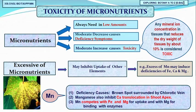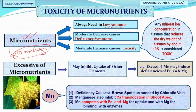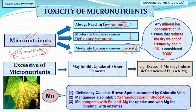Now we begin today's lecture with the toxicity of micronutrients — a very important topic likely to appear in your NEET exam. Micronutrients are required at less than 10 millimoles per kg concentration. A moderate decrease in their concentration leads to a deficiency syndrome, but a moderate increase in their concentration causes toxicity — this is called toxicity of micronutrients.